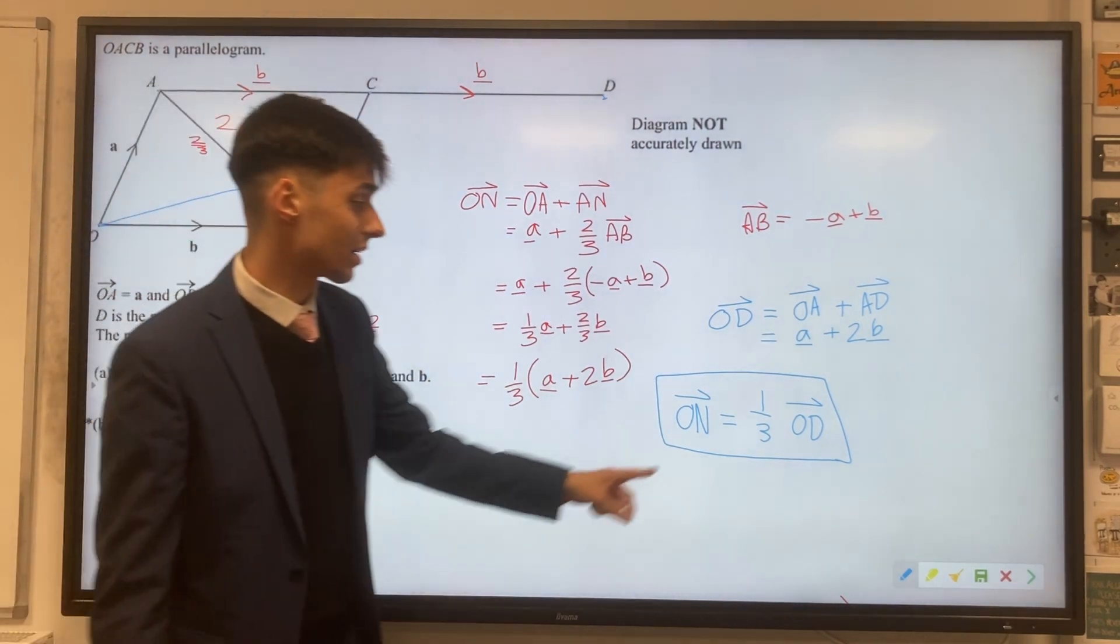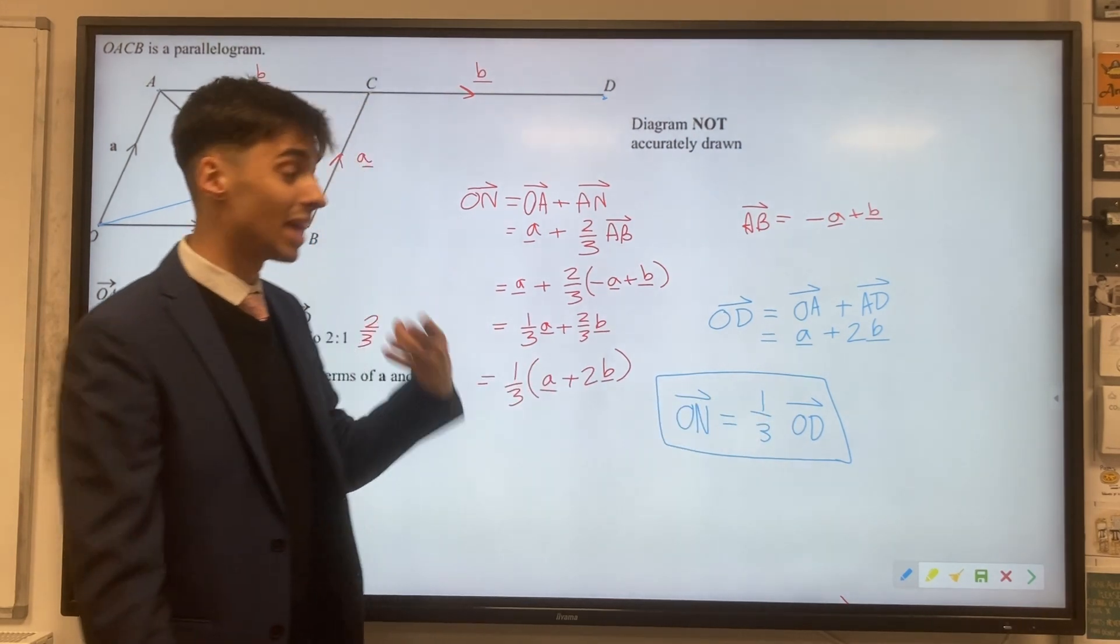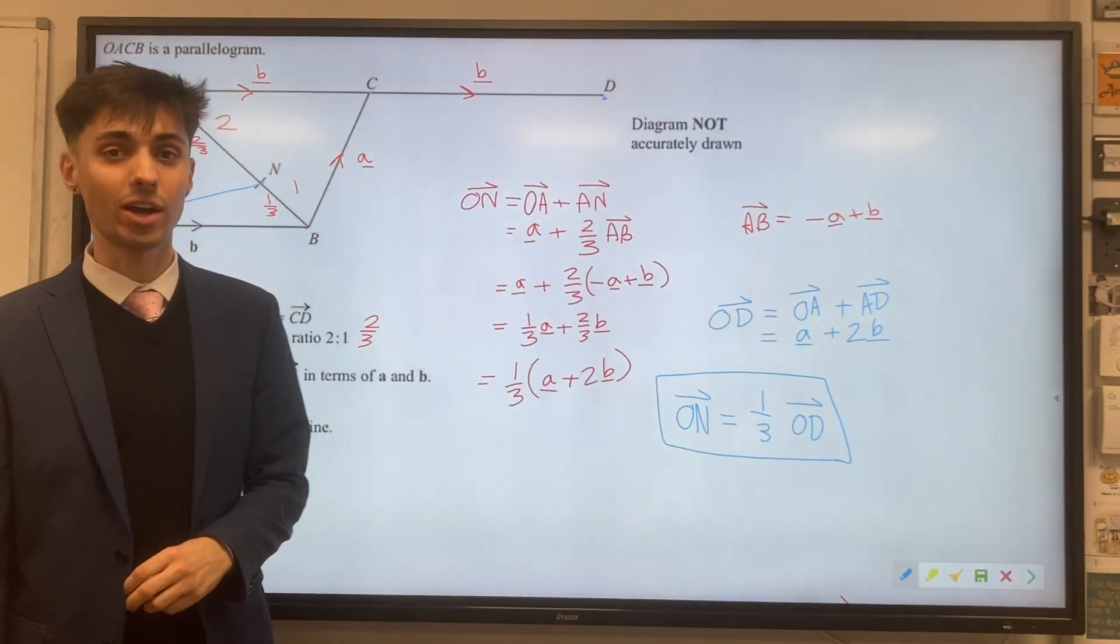This means that the two vectors must be parallel, and because they have O in common, they must be the same straight line.